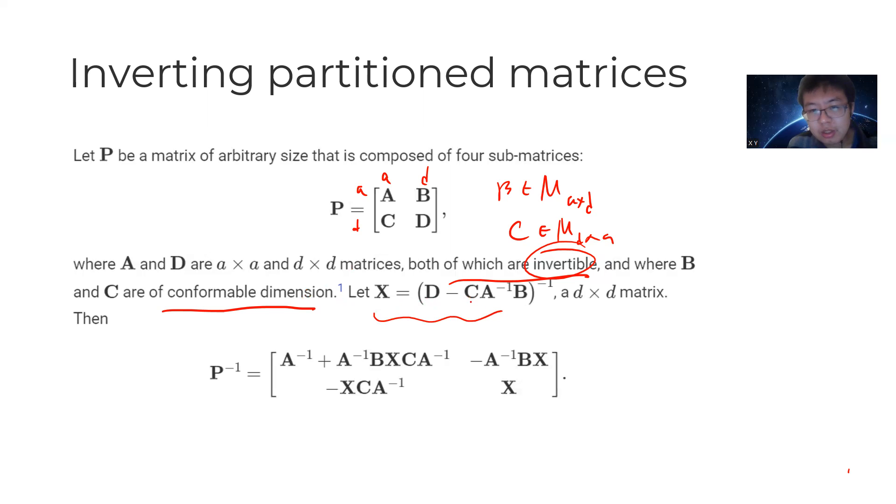X is D minus C A inverse B inverse, a D by D matrix. P inverse is given by this formula. Our goal is to prove that this P inverse is really the inverse of P.